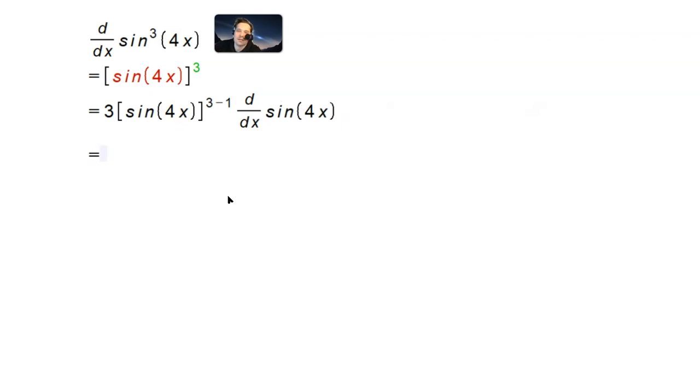Again, I'm going to have 3 and then sin(4x) raised to the second. Now, the derivative of that part—so here you have to use the chain rule again. Now, how do I know that? Because here, sine (that green one) is one function and then 4x is a separate function. So I have to use the chain rule again.